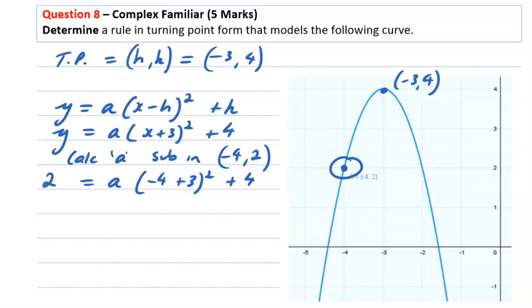To calculate a, we need to rearrange and solve. So take 4 from both sides, and negative 4 and 3 make negative 1. Negative 1 squared is 1. So a equals negative 2.